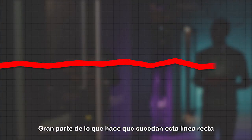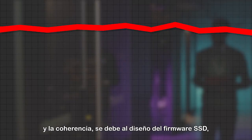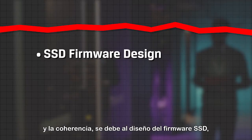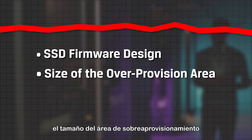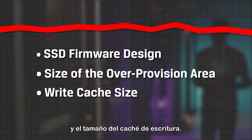A lot of what makes that straight-line consistency happen goes into the SSD firmware design, the size of the over-provision area, and the right cache size.